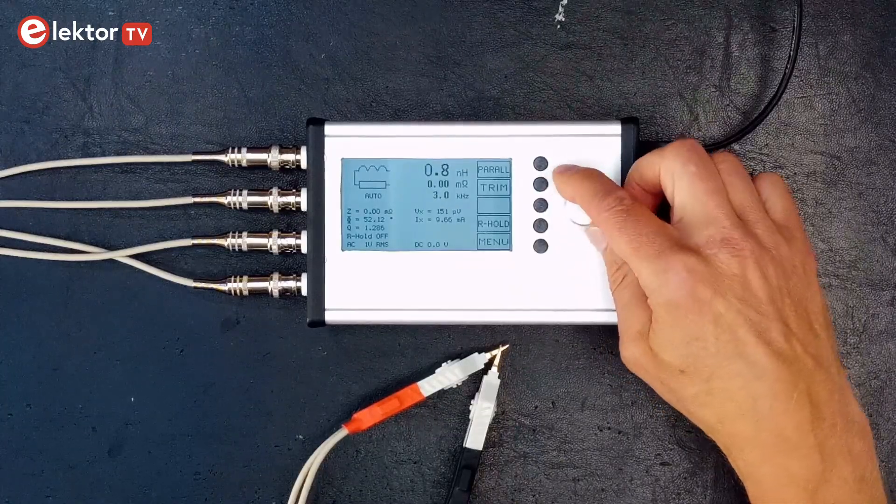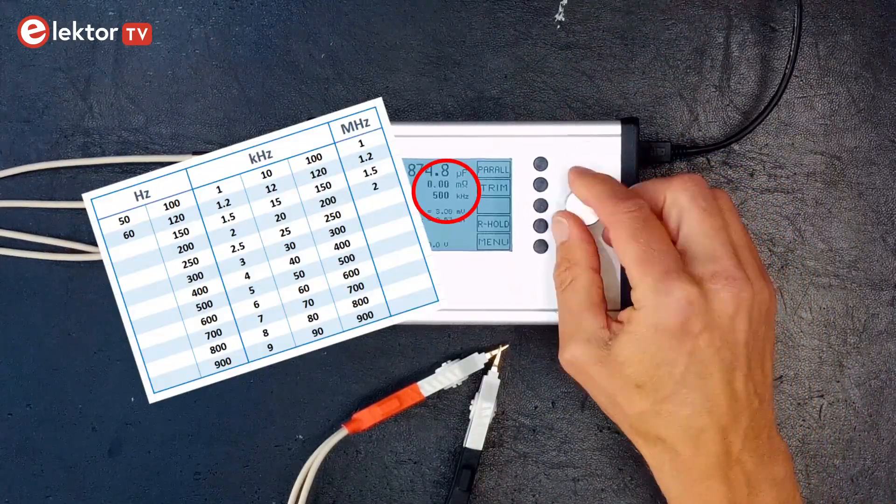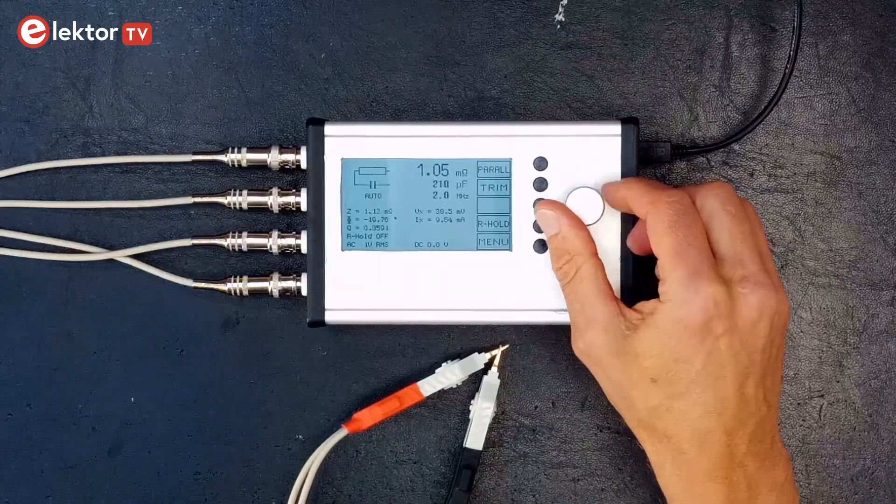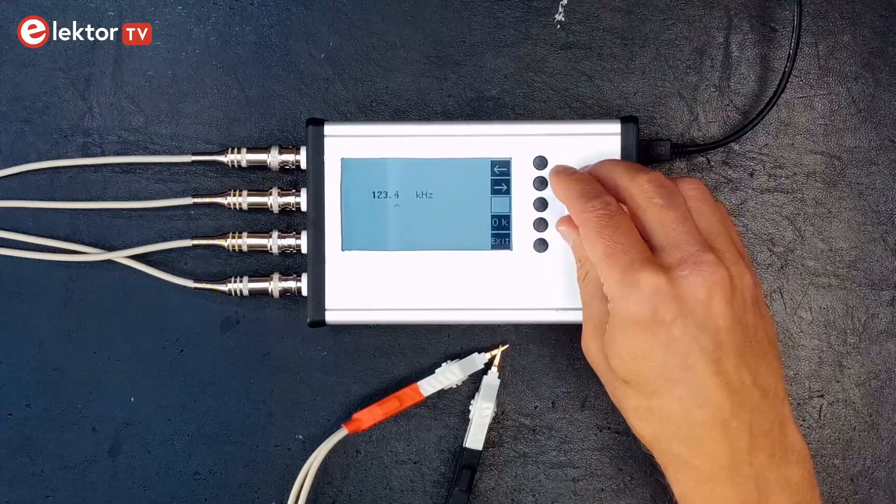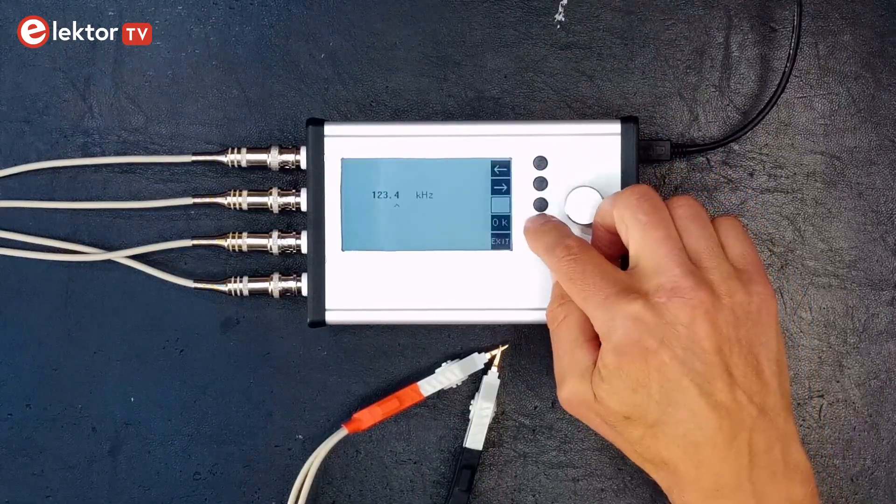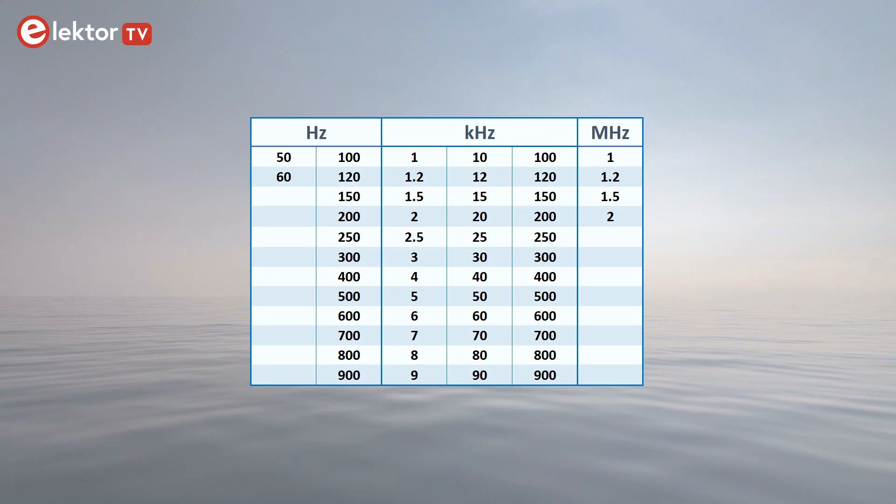The LCR meter features 54 predefined test frequencies from 50 Hz up to 2 MHz. It is also possible to manually set a frequency anywhere in this range, but I won't use that possibility in this video. Also, I did not use all the 54 predefined frequencies, but only a few.